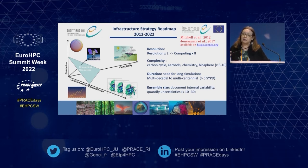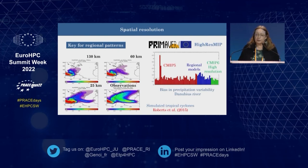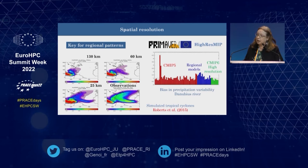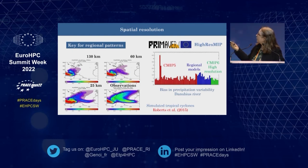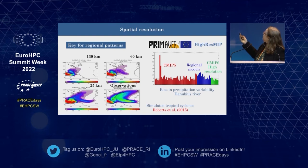For spatial resolution, here is an example with our 25-kilometer model used in HighResMIP, the high-resolution model intercomparison project. You can see the track density of cyclones in the North Atlantic. The observations show where the main cyclone paths are. Models at different resolutions from the UK Hadley model show: at 100 kilometers you are unable to reproduce the pattern; better at 60, but much better at 25 kilometers — still not perfect, but substantially improved.